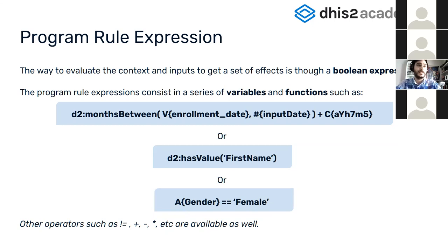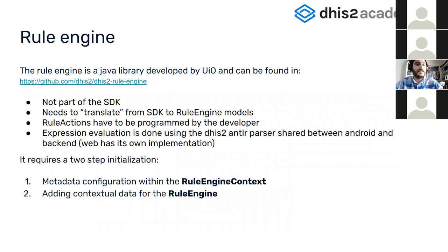To evaluate program rules in Android, we use the rule engine. This is a Java library developed by UiO — the repository link is in this presentation. The rule engine is not part of the SDK; it's its own library with its own Java classes. We need to translate classes from the SDK to the rule engine models. The rule actions and effects have to be carried out by the developer — the rule engine tells you what to do, but it's up to the developer to apply those rules to whatever fields you have created.